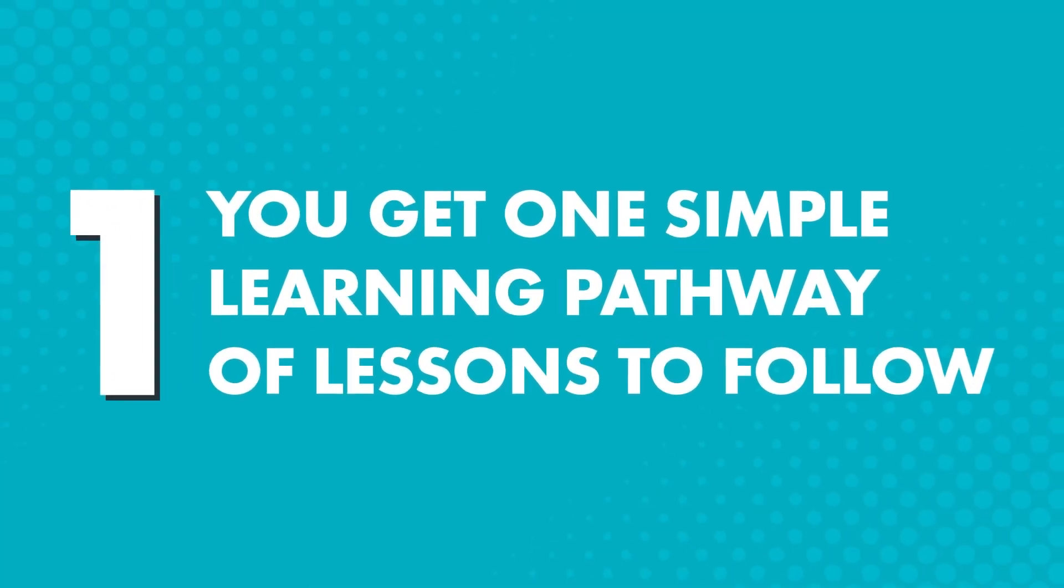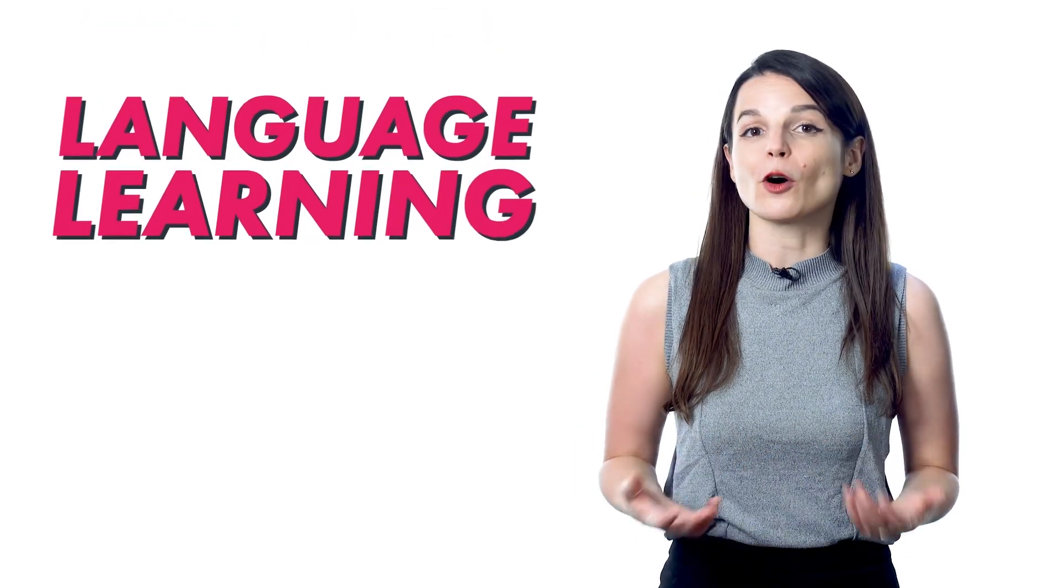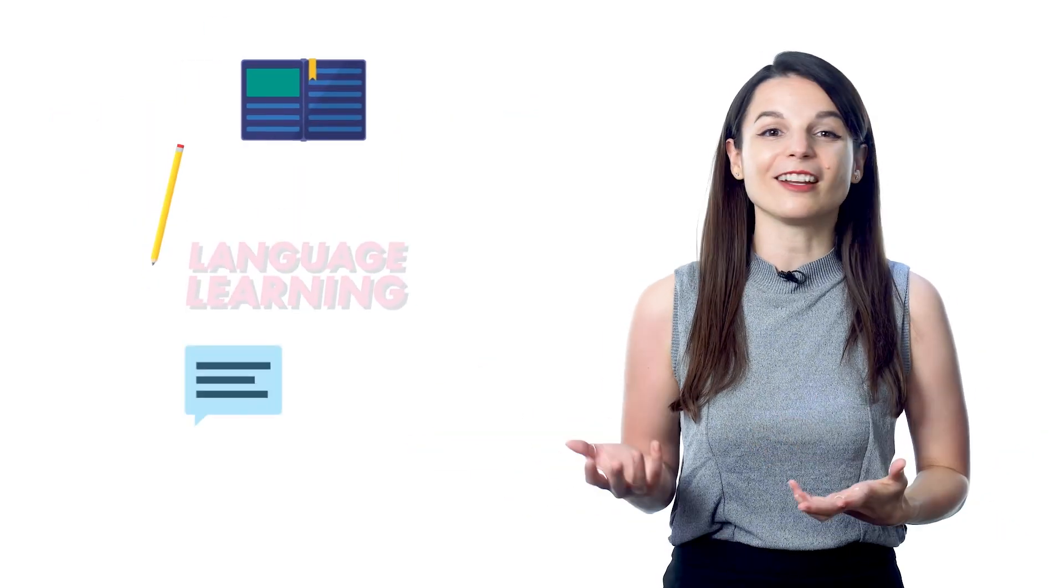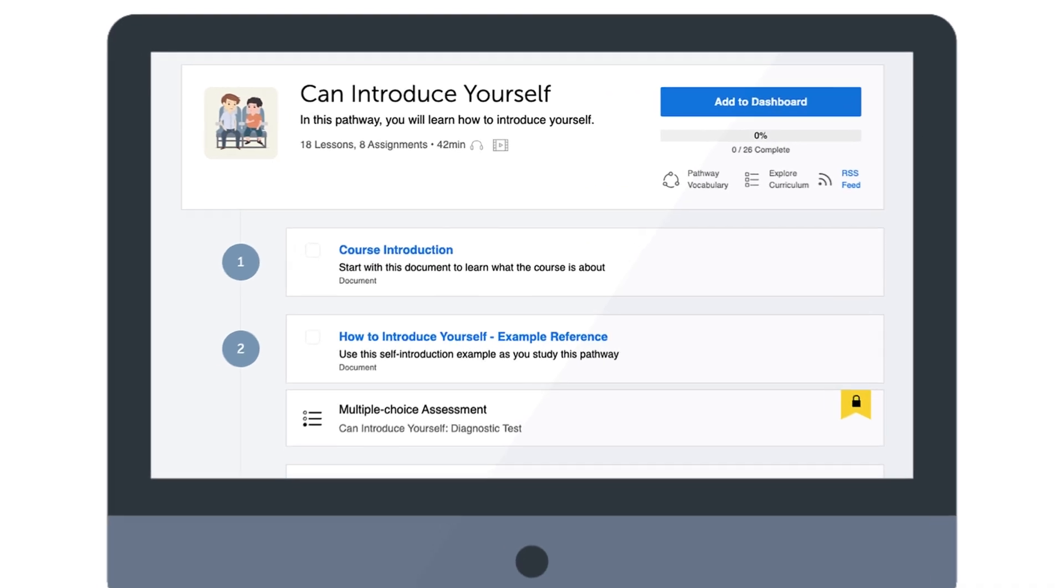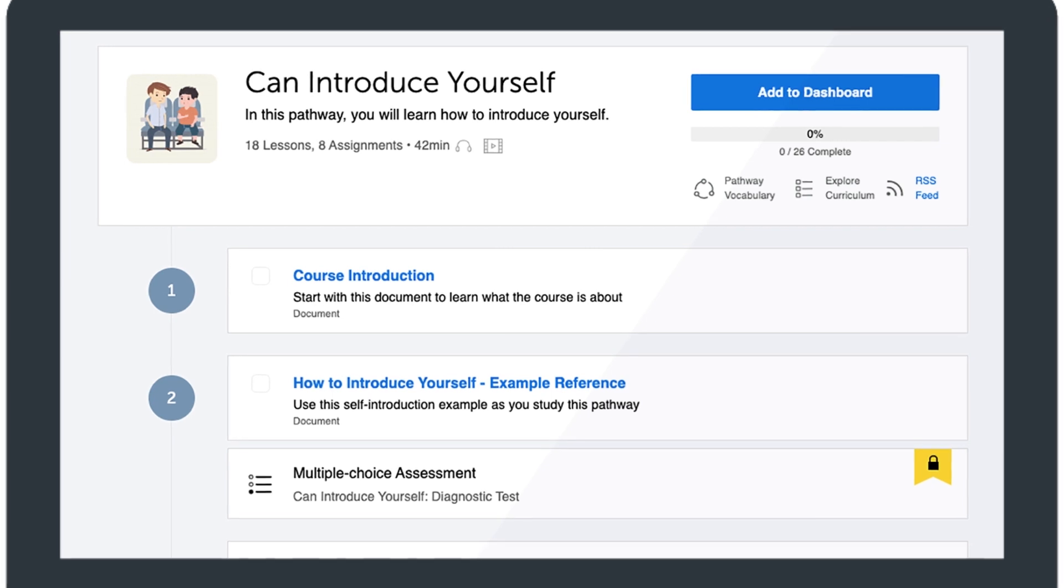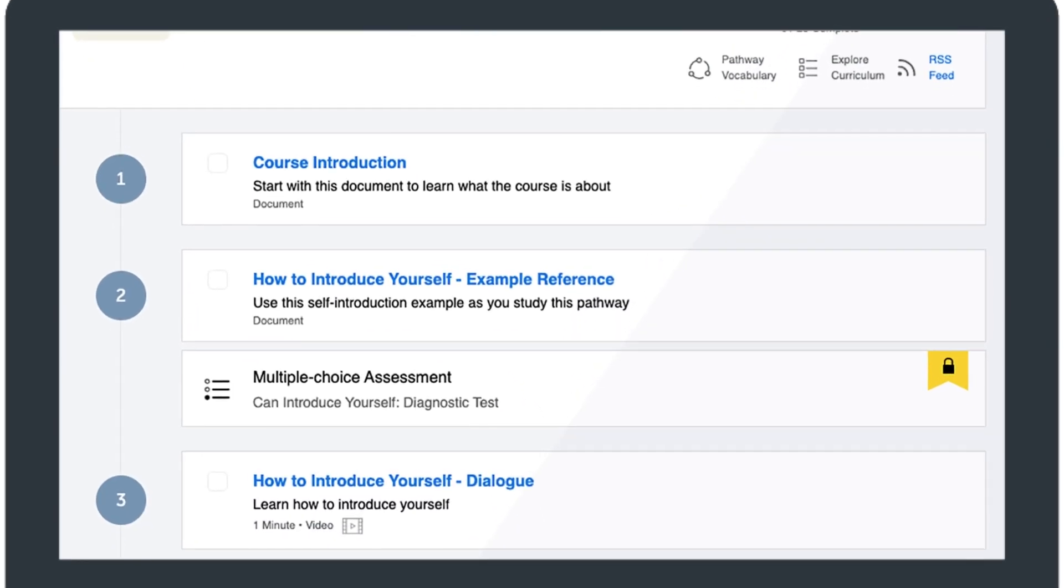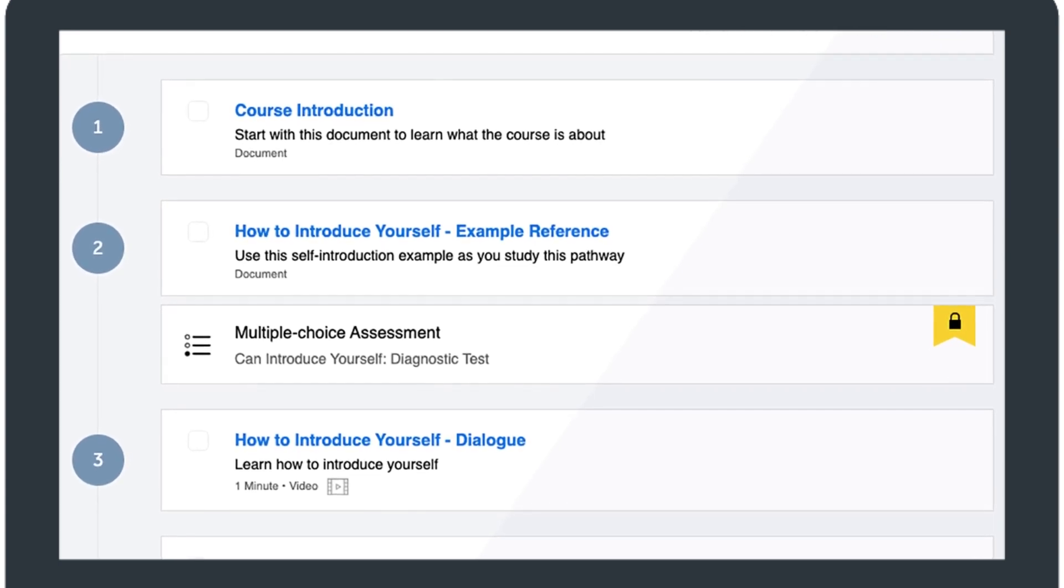Now, how does the premium plan help you learn a language faster? One, you get one simple learning pathway of lessons to follow. If you've always felt that language learning is overwhelming because there's so much to do—reading, writing, speaking, listening, and vocabulary—and there's no clear path to take, well, you're not wrong. So that's exactly why you get one learning pathway with our program. The learning pathway is simply a pathway of lessons for you to take. Meaning, you now have a clear path to follow instead of wondering about how you should learn the language or what to do next. Just follow the pathway, take the lessons, and complete the assessments from lesson one to two to three, and from the absolute beginner level up to advanced.